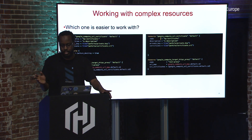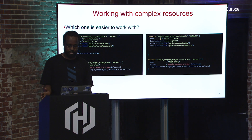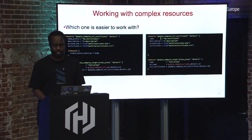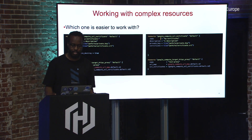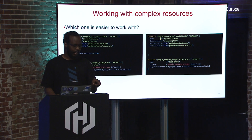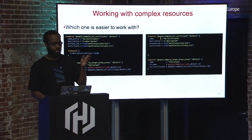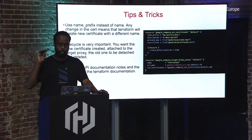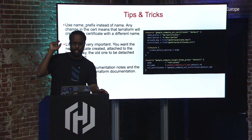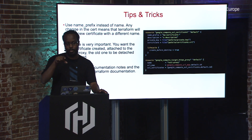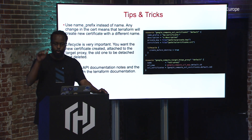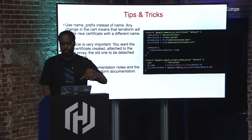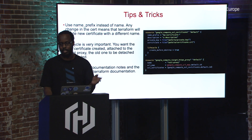Without the lifecycle block, if you deploy the configuration on the right and wanted to change the certificate because it expired, the next run would fail because Google complains it already exists when you're trying to create something that already exists. A lot of people will change the resource ID of the resource, which doesn't really help. The order of execution is also important — you want Terraform to create the new certificate, apply it to the load balancer, remove the old certificate, then delete it.